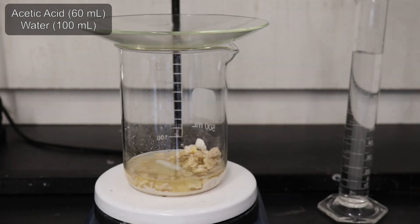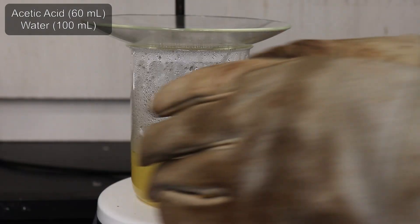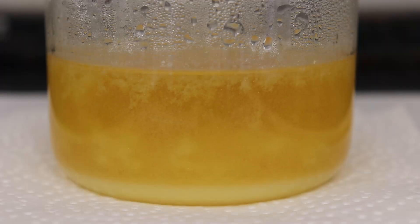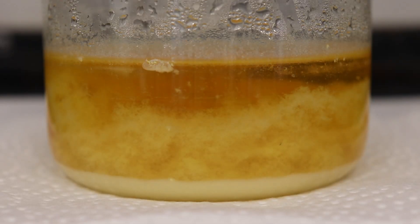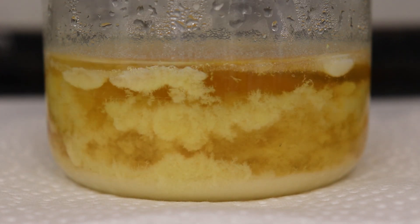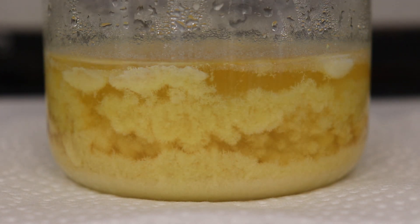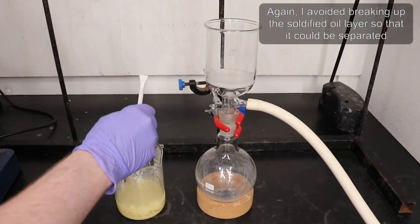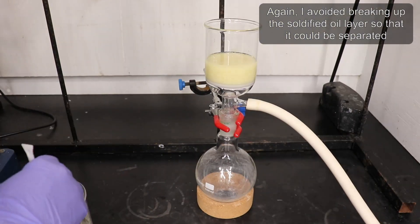Moving the oiled fraction forward, I recrystallized it from 60 mL of glacial acetic acid and 100 mL of distilled water. Like last time, a layer oiled out instead of recrystallizing. I only broke up the crystallized material before filtering, separating it from what oiled out.